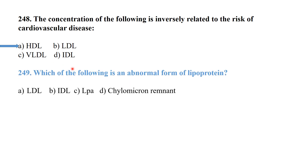Which of the following is an abnormal form of lipoprotein? Lp(a) is the abnormal form of lipoprotein.